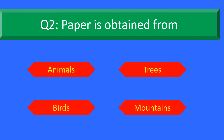Paper is obtained from — Option A: Animals, Option B: Trees, Option C: Birds, and Option D: Mountains.